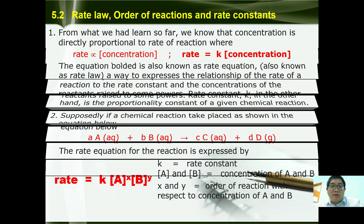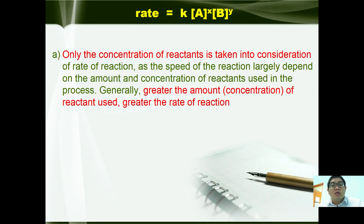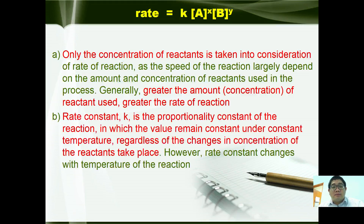Based on the rate equation discussed, only the concentration of the reactants is taken into consideration, as the speed of the reaction largely depends on the amount of concentration of the reactants used in the process. Generally, greater the amount of reactant used, greater the rate of reaction. Rate constant k is the proportionality constant of a reaction in which the value remains constant under constant temperature, regardless of changes in concentration of the reactants.